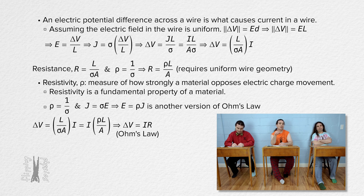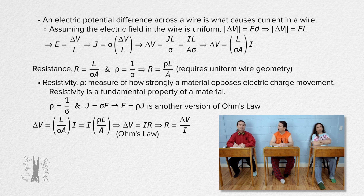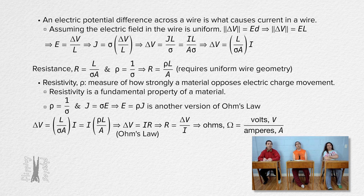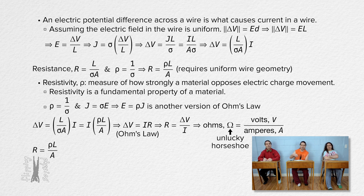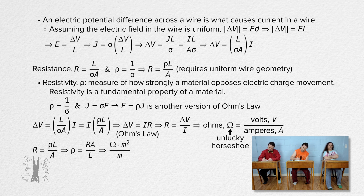Not all materials are ohmic — only objects made from materials which follow Ohm's law are ohmic. We can solve that equation for resistance to show that resistance has units of volts over amperes, which we call ohms, for which the symbol is uppercase omega — the unlucky horseshoe, unlucky because it is upside down. The units for resistivity are ohm meters, since resistivity equals resistance times cross-sectional area over length: ohms times square meters over meters gives ohm meters.